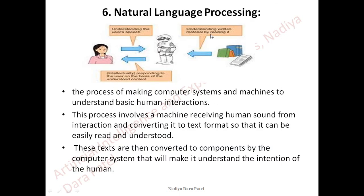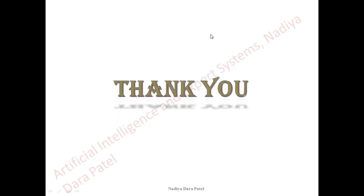The process of making computer systems and machines understand basic human interaction involves the machine receiving human sound and converting it to text format so it can be read and understood. These texts are then converted to components by the computer system to find the intention of the humans. This covers the main branches of artificial intelligence — the most current and important ones. Thank you so much, I hope you understood.